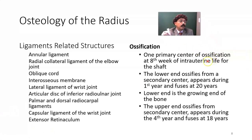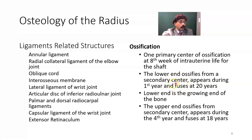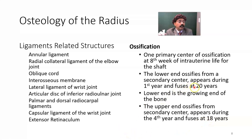Ossification: there is one primary center of ossification at the 8th week of intrauterine life for the shaft. The lower end ossifies from a secondary center appearing during the first year and fuses in the 20th year — this is the growing end. The upper end ossifies from a secondary center appearing during the 4th year and fuses at the 18th year. There may be some variation in females — fusion may occur at 16 years.